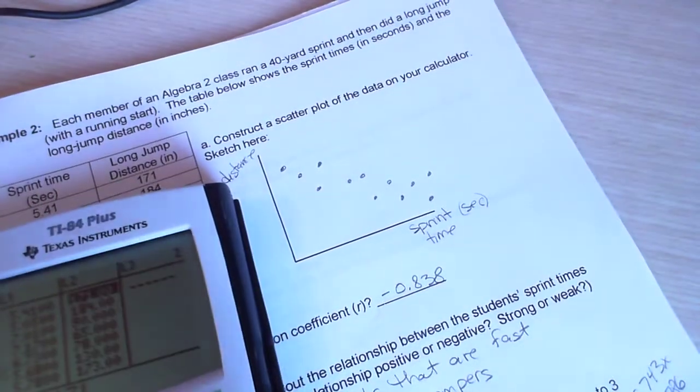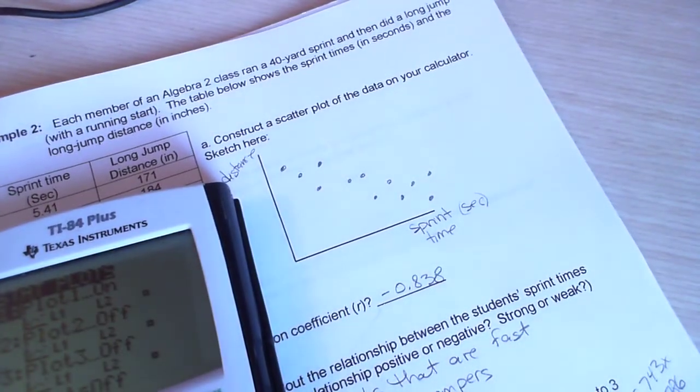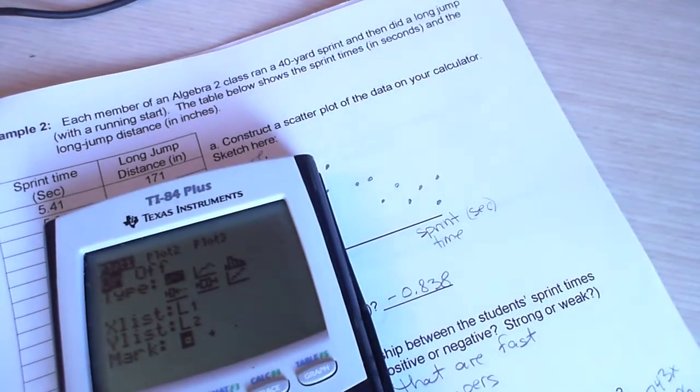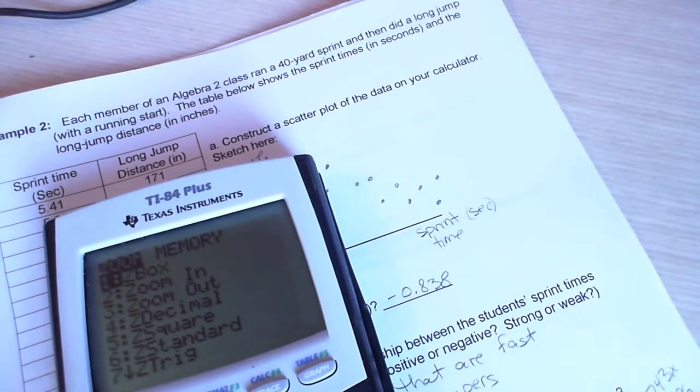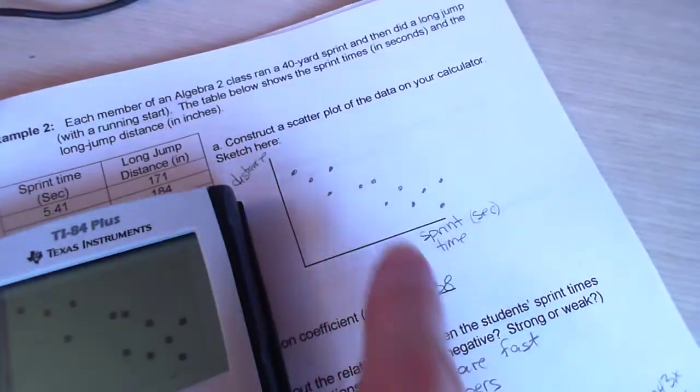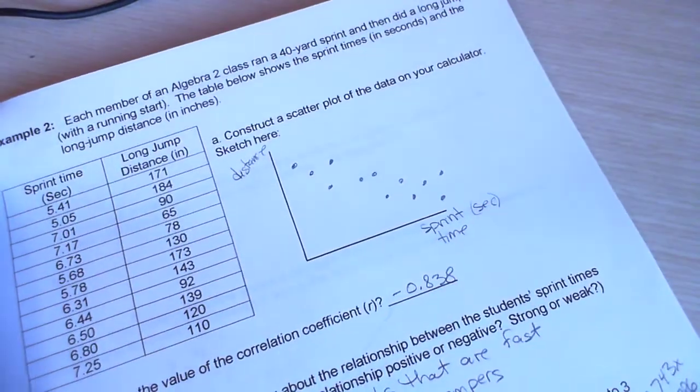So scatterplot, remember we want to do second statplot. And then make sure everything is as we need it. And then if we hit zoom 9, we get our scatterplot. And so I transferred it onto the paper.